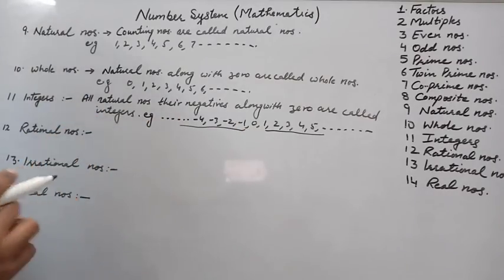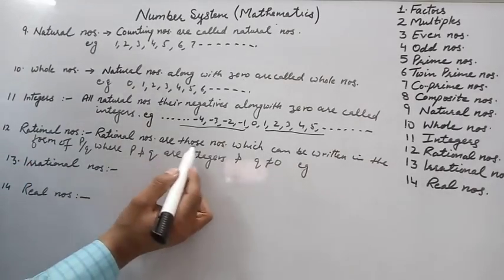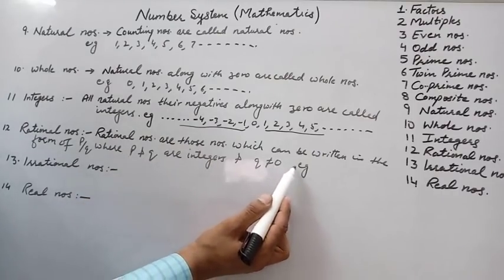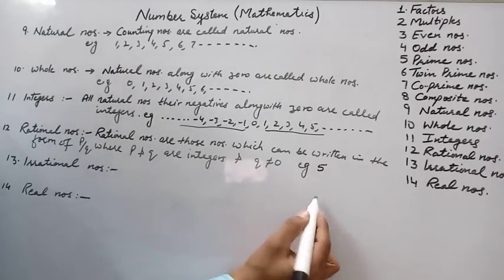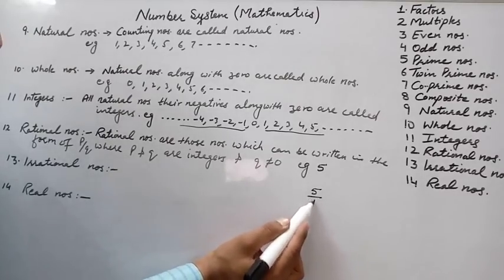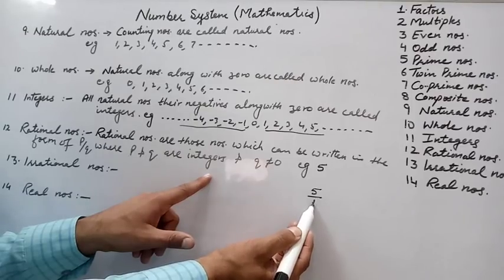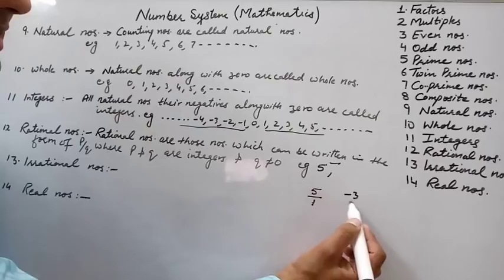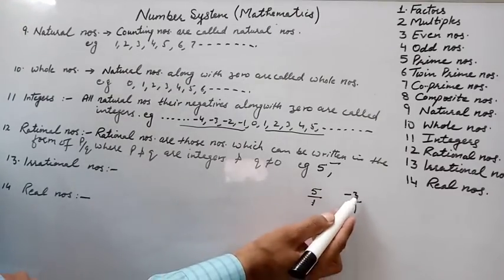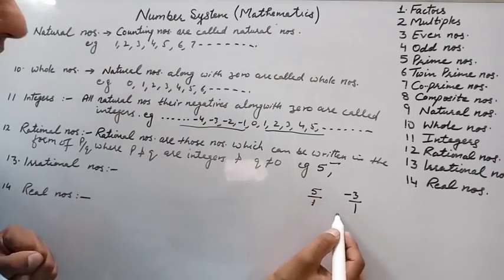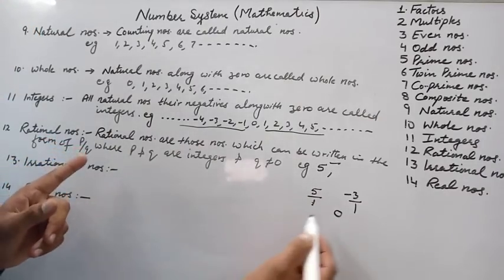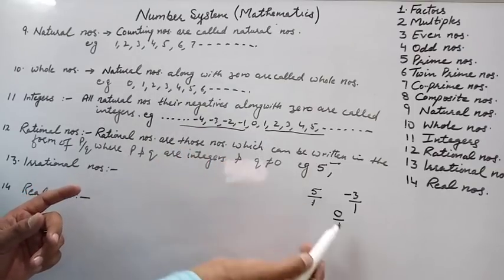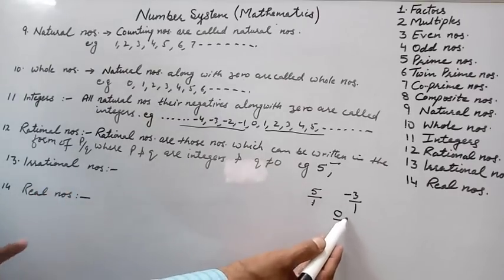Rational numbers are those numbers which can be written in the form p/q, where p and q are integers and q ≠ 0. For example, 5 can be written as 5/1 — both are integers and denominator is not zero, so 5 is rational. Similarly, -3 = -3/1 is rational. Zero is also rational because 0 = 0/1, where both numerator and denominator are integers and denominator is not zero.